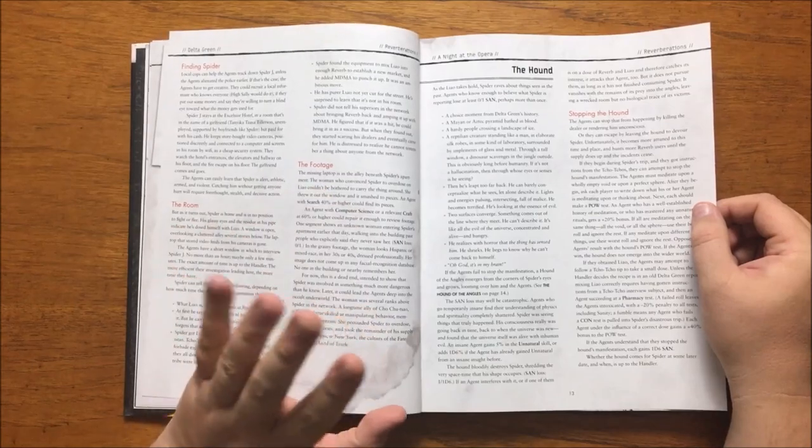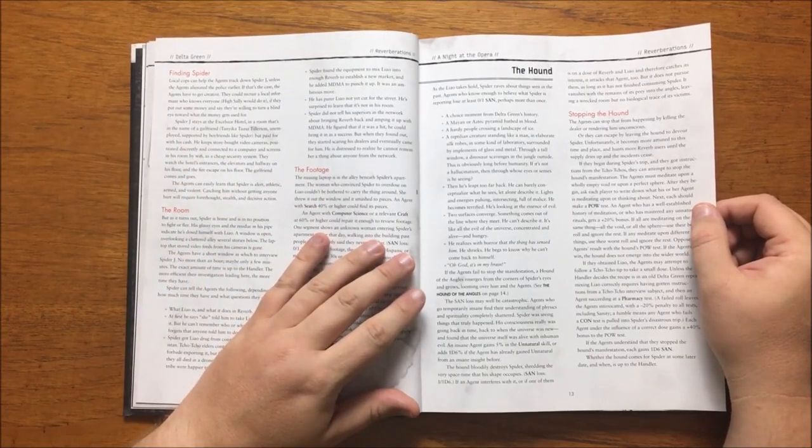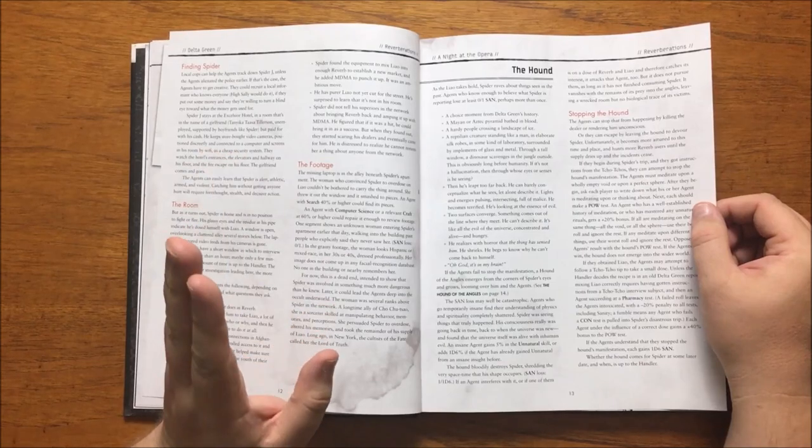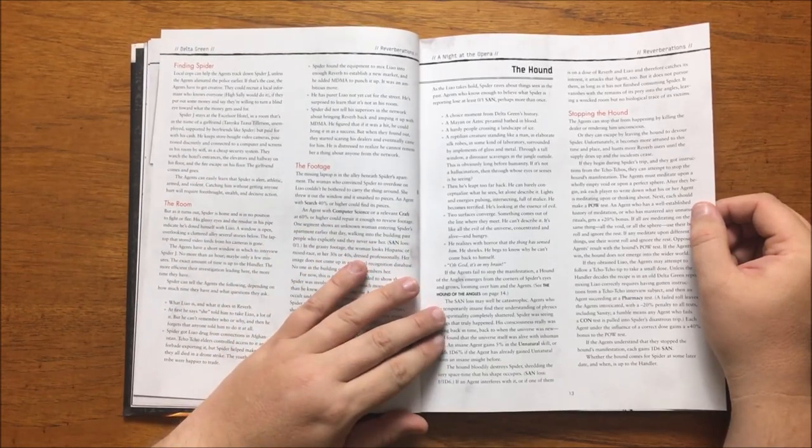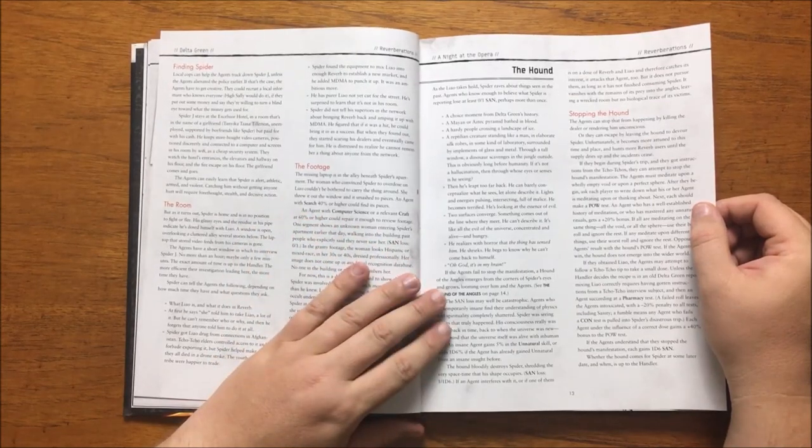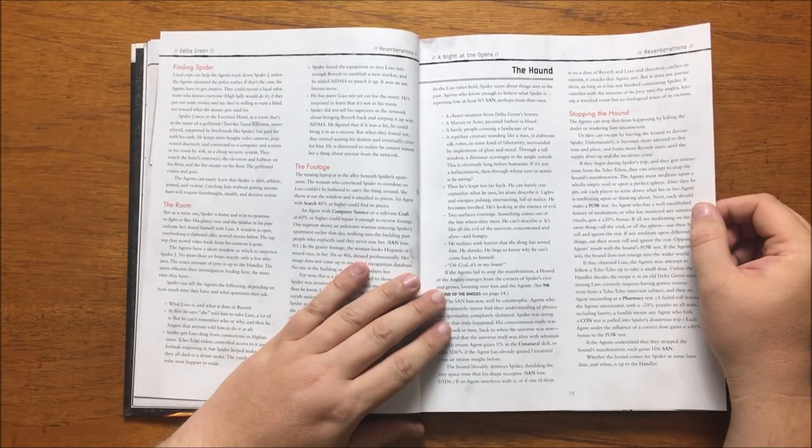He then leaps too far back and he can see energies pulsing intersecting with malice. He becomes terrified at this point and where two surfaces converge he can see an evil coming out of the line where they met. He then realizes with horror that the thing has sensed him and screams oh god it's in my brain.